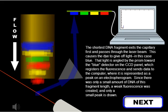The shortest DNA fragment exits the capillary first and passes through the laser beam. This causes the dye to give off light, in this case blue. That light is angled by the prism toward the blue detector on the CCD panel, which registers the fluorescence and sends data to the computer, where it is represented as a peak on an electropherogram. Since there was only a small amount of DNA of this fragment length, a weak fluorescence was created, and only a small peak is drawn.